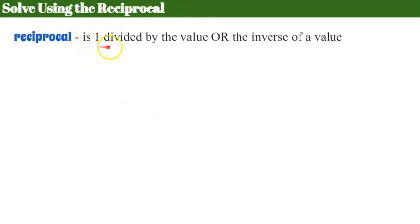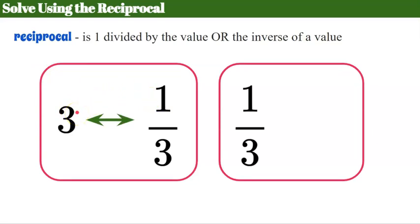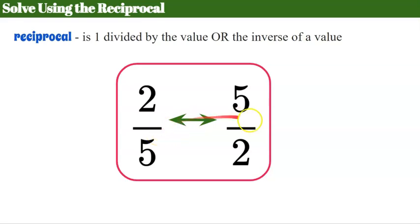Now we're going to learn how to solve using a reciprocal. A reciprocal is 1 divided by the value, or the inverse of the value. Students often think of it as flipping. If I have 3, its reciprocal is 1 third, because 1 third times 3 is 1 — they undo each other. Another example: the reciprocal of 2 fifths is 5 halves. If you multiply a number by its reciprocal, the product is 1: 2 fifths times 5 halves equals 10 over 10, which is 1.